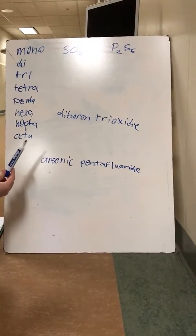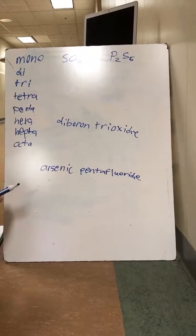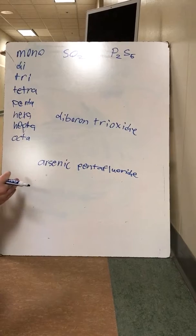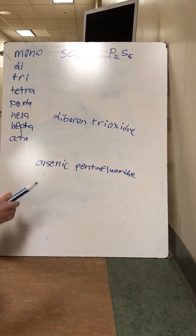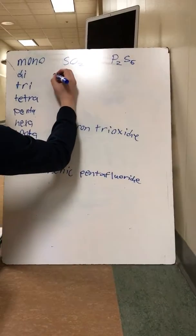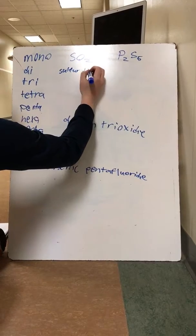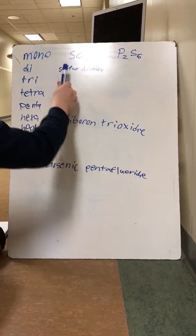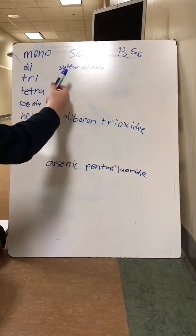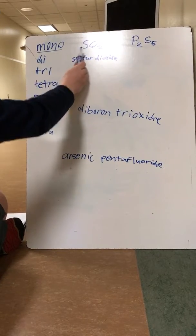You're going to learn how to name and write formulas for covalent compounds. You need to use these prefixes for the element depending on how many of them are in the compound. This one would be sulfur dioxide, because there's one sulfur and two oxygen atoms. We would not use the prefix mono if the element is in the first position.